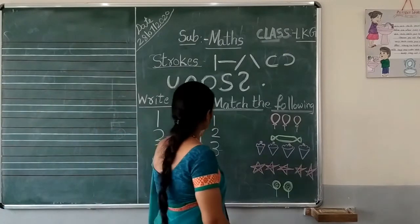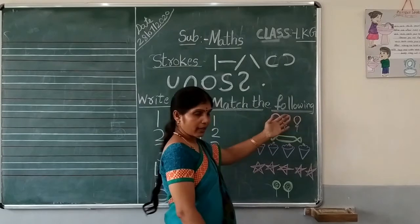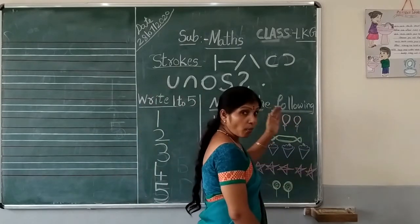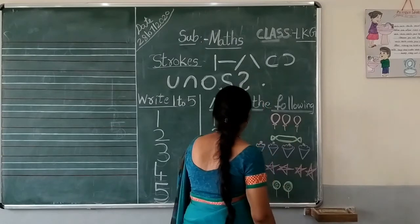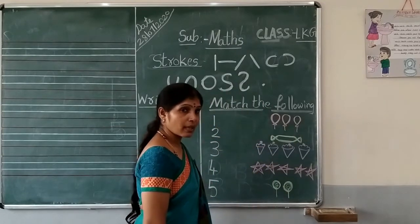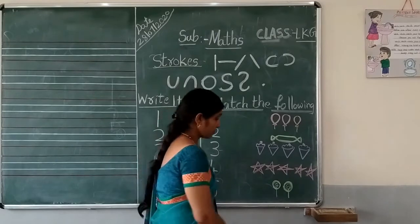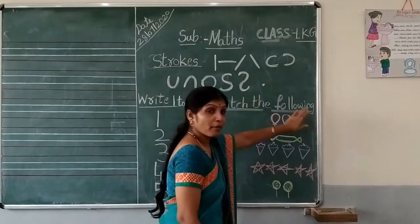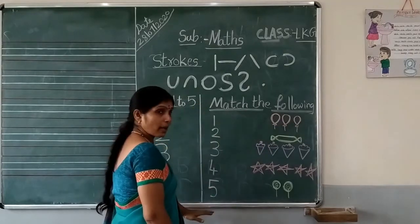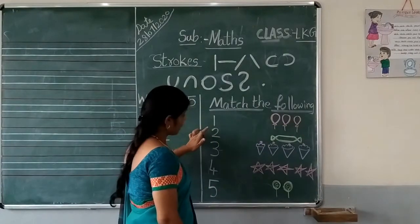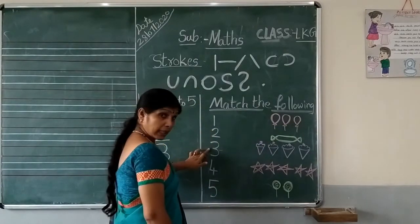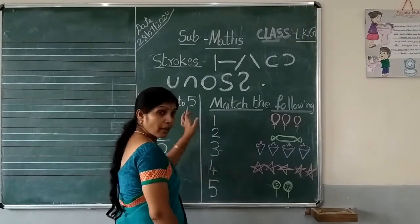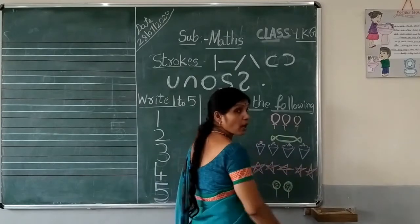See children, this is match the following. These are numbers and these are objects. Come on children, let's play. This is match the following. These are numbers: 1, 2, 3, 4, 5. And these are objects.